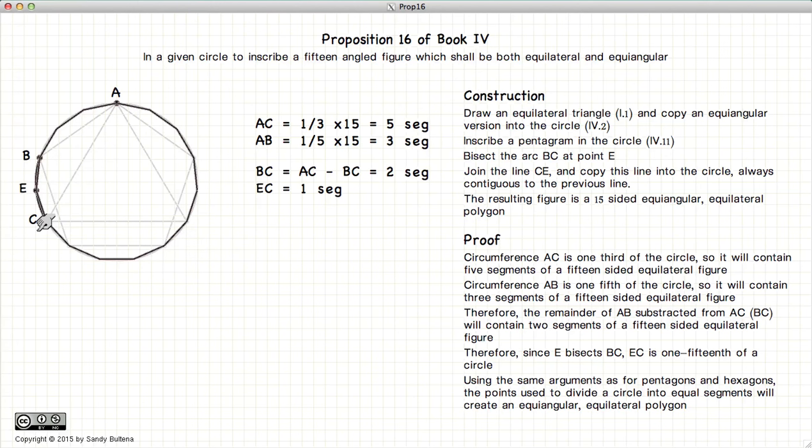Now using the same arguments that we used for pentagons and hexagons, the points that we used to divide the circle into equal segments will create equiangular and equilateral polygons. So rather than go through all the steps required to show that each one of these sides is equiangular and equilateral...